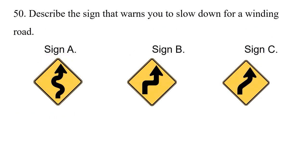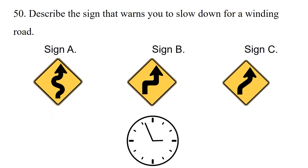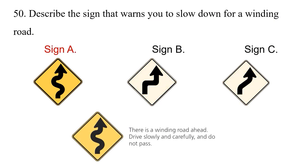Question: Describe the sign that wants you to slow down for a winding road. Option 1: Sign A. Option 2: Sign B. Option 3: Sign C. The answer is option 1: Sign A. There is a winding road ahead — drive slowly and carefully and do not pass.